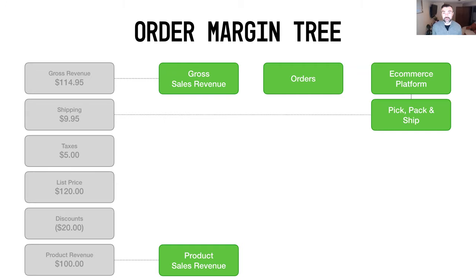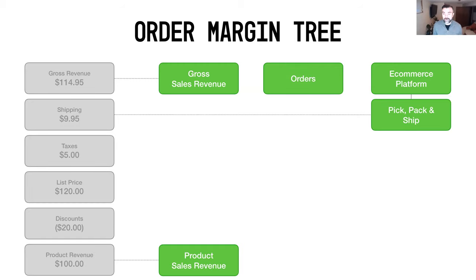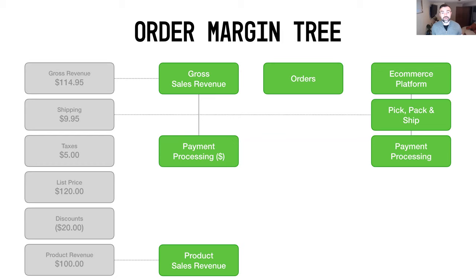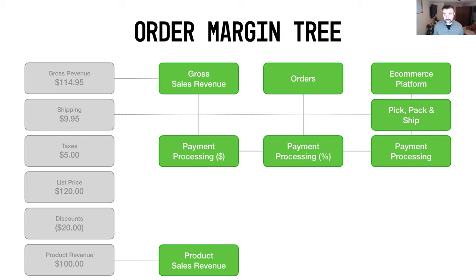Next, we've got your pick, pack, and ship costs. Whether you're charging the customer for shipping or not, someone has to pay to pick the product, pack it in a box, and ship it out the door. Then we've got payment processing. With payment processing, we take into account the gross sales revenue — typically as a percentage of all the revenue — and your orders, typically as a factor of the number of orders on a per-order basis. Once you understand how payment processing works, even a few basis points can make a world of difference, and it's probably one of the biggest costs of doing business in e-commerce today.